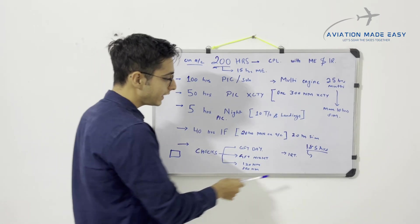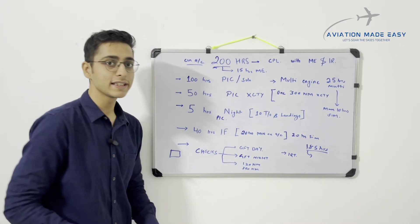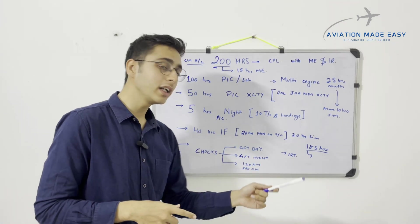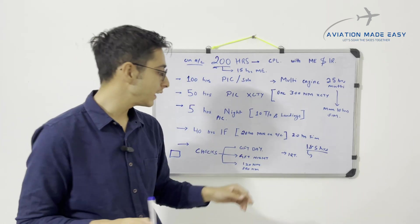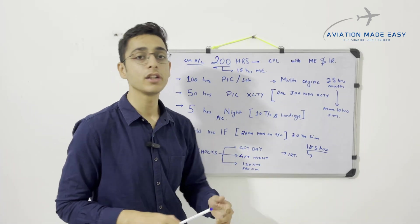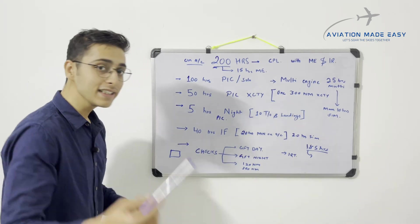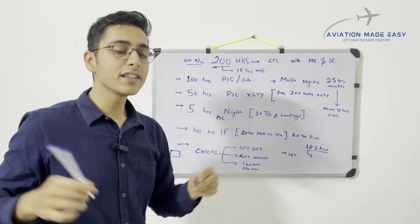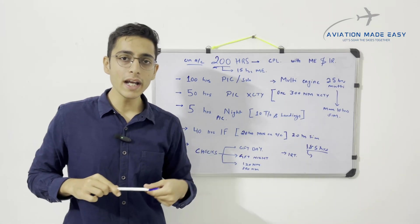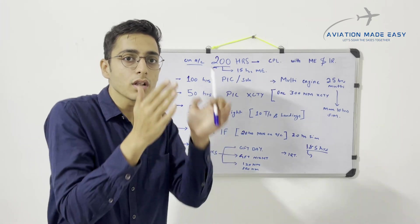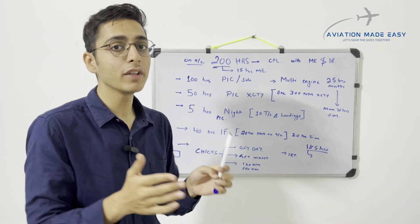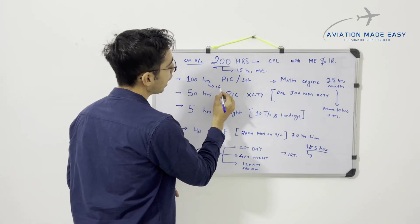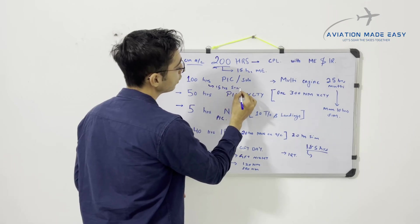An important catch: all these tests must be done within six months before the date of application — they have a six-month validity. If you don't apply for your CPL within six months of completing your checks, they lapse and you must redo them. There is also a recency requirement: within six months before the date of application you must have completed 15 hours of solo PIC time.